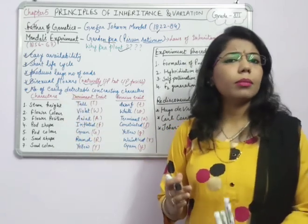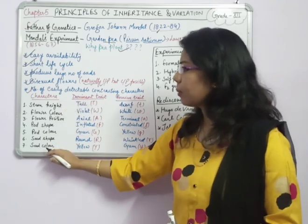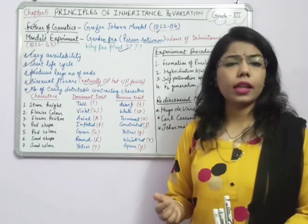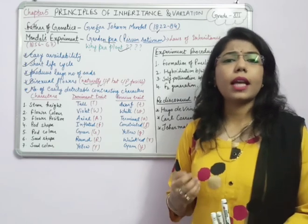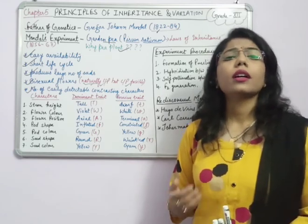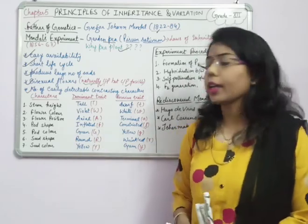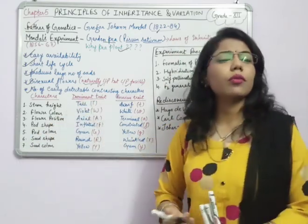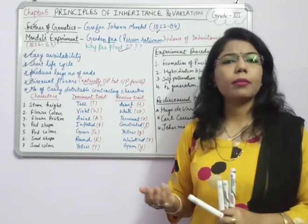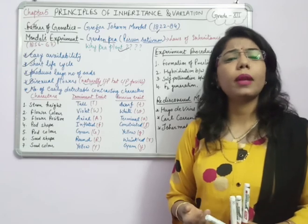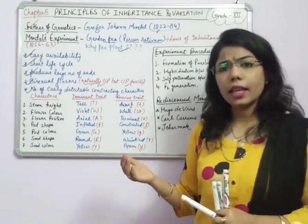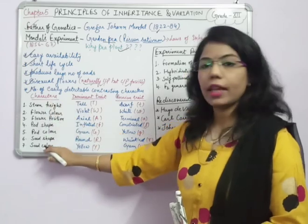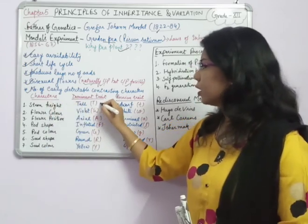There is a difference between characters and traits. A character is a broad feature like hair color or eye color, while traits are the specific expressions — for example, black or brown hair. Mendel took seven characters, each with two contrasting traits. He assumed one trait is dominant and the other is recessive.